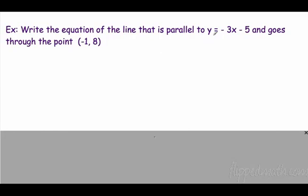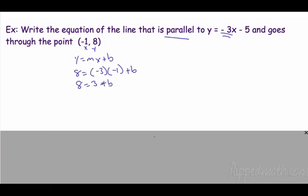Write the equation of the line that is parallel to y equals negative three x minus five and goes through the point negative one, eight. Remember, as always, y equals mx plus b. That's our key. So we have x, we have a y. We usually need three out of these four. What else do we have? Well, we know it's parallel. So what's our slope? Our slope here is negative three. So it has to be the same. So we're going to use negative three. So y is eight. m is negative three times x is negative one. We don't know our intercept. All right, negative three times one is positive three. Subtract three and we get five. So our intercept is five. Our slope is negative three. So the equation would be y equals negative three x plus five.